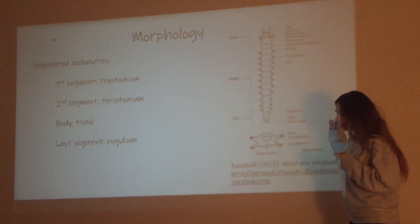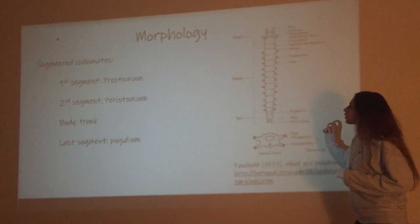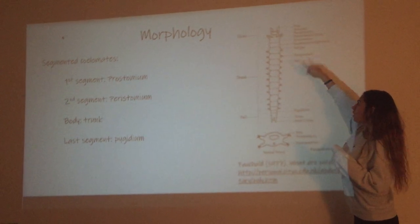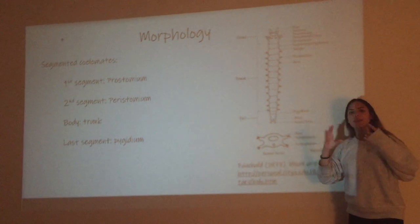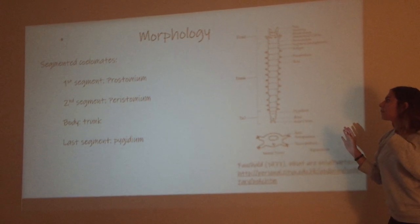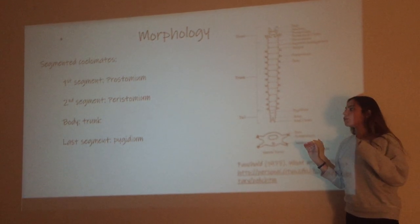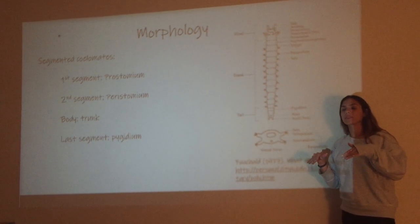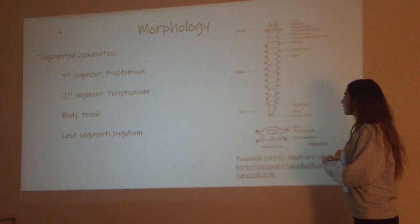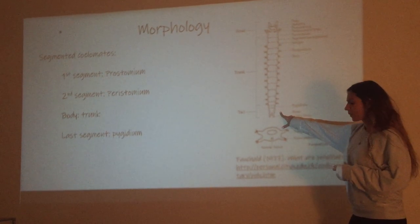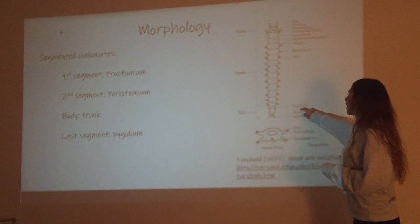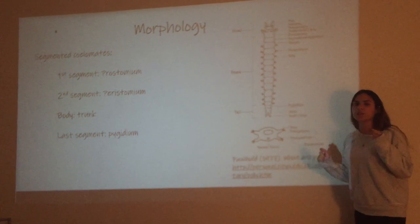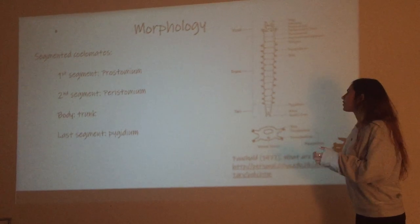Their locomotion is usually due to their parapodia, but they also have longitudinal muscles that run all along their bodies. By contracting and releasing these muscles, they make undulating motions, and that's how some of them move as well, which helps them move through their tubes once they are made. The final segment is going to be the pygidium, and this will have the anus or the rectum, and sometimes it's going to include some sensory cirri in there as well.